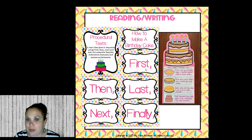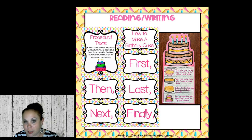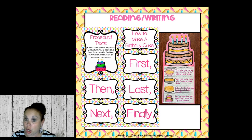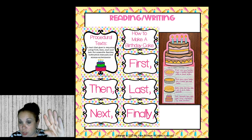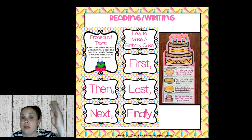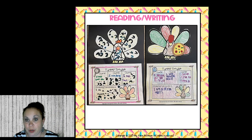We make a craftivity with the cake at the top and the different sequence-of-events steps for how to make it. I really feel that having the cards visually displayed on the pocket chart or smart board — so they can see the cards and the words they need for their story — is very helpful.